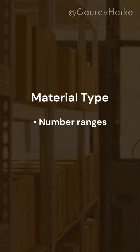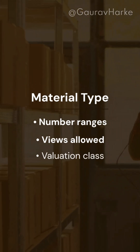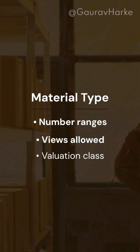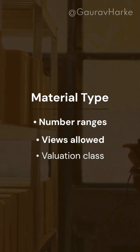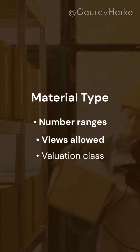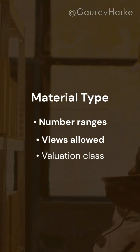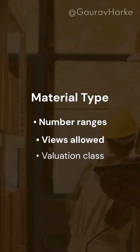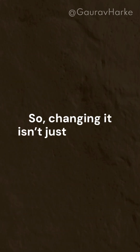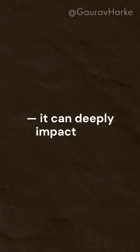In SAP, the material type defines how a material behaves. It controls number ranges, views allowed, valuation class, and even procurement type. So changing it isn't just cosmetic — it can deeply impact your material master data and transactions.